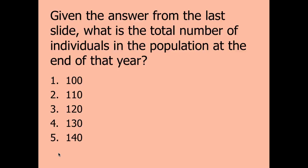How many individuals would be in that population at the end of the year? We had the initial 100, plus a growth rate of 10 people per year — so 100 plus 10 equals 110. If you follow the link, that will take you to the website with additional practice problems if you need more work on these population formulas.